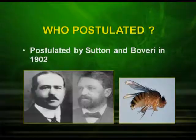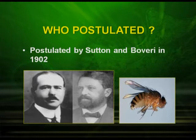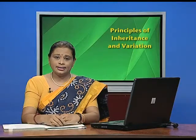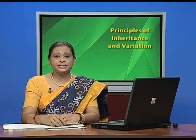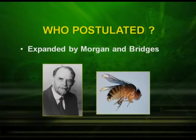At that particular time, in 1902, Sutton and Boveri postulated the Chromosomal Theory of Inheritance. Later, it was expanded by Morgan and Bridges.